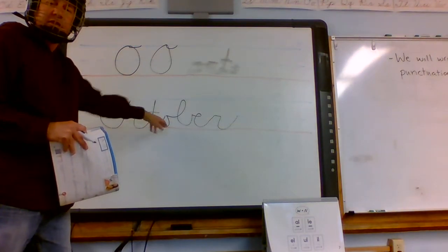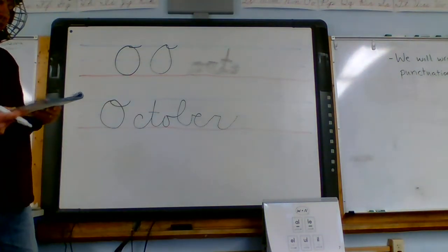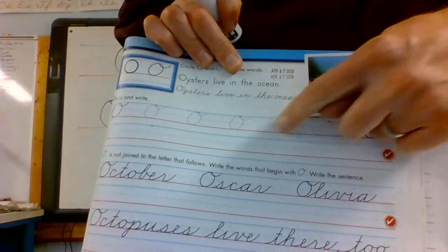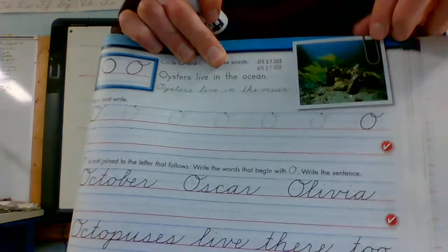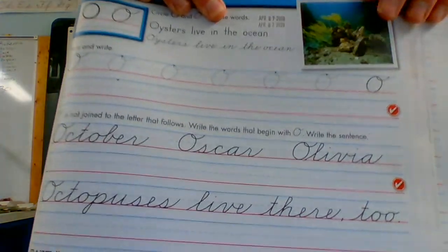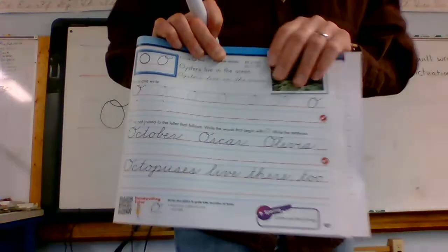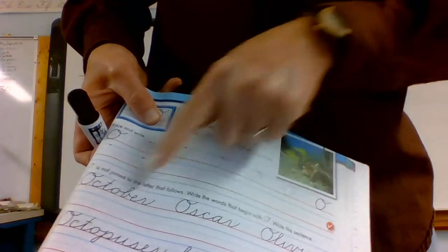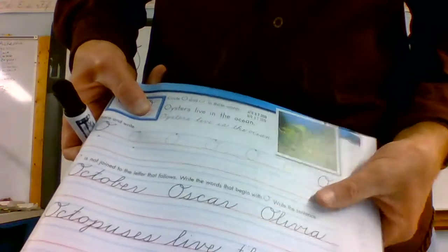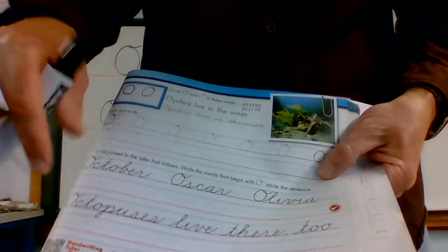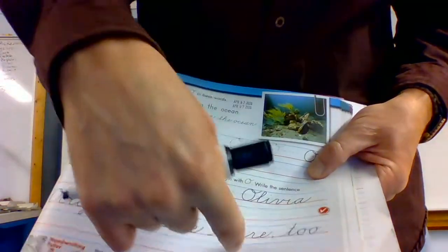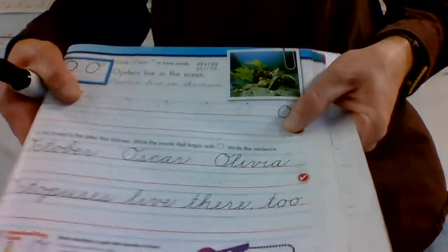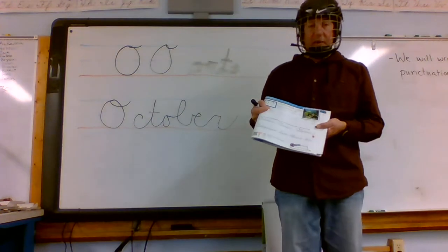Right here which connects into a B. So pretty simple, practice your O's. Make sure you're tracing over on this line and not just jumping down here. I'm going to send this back if you don't trace over. So trace over those O's, then do your O's. October, Oscar, Olivia. Octopuses live there comma two period. Don't forget your punctuation on there.